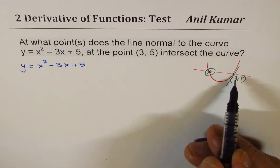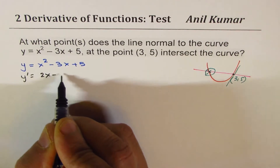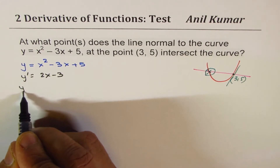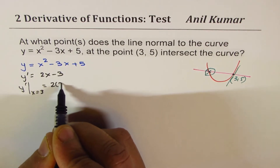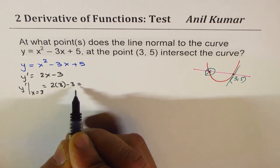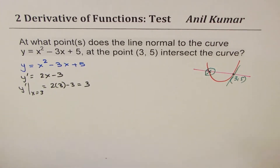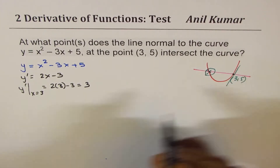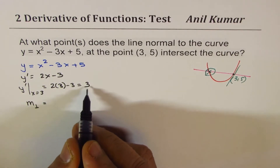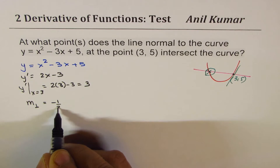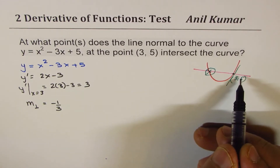To find the equation of the normal, let's find the slope first. The derivative of x² - 3x + 5 is 2x - 3. At x = 3, that gives 6 - 3 = 3, so the slope of the tangent is 3. The slope of the perpendicular, the normal, is the negative reciprocal: -1/3.